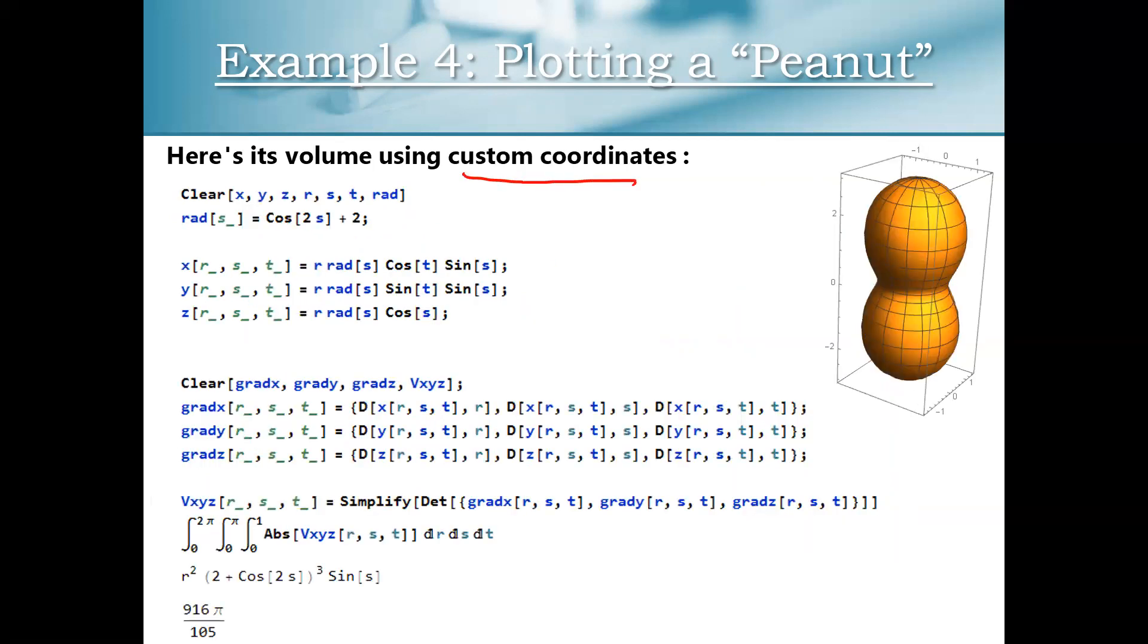And here it is using custom coordinates. Guys, it looks very similar, but right here I have modified my X of RST, Y of RST, Z of RST, so that instead of just having R, I have R rad of S. Again, R rad of S, R rad of S. And now what R is going to represent is a parameter that's going to go from zero to one. And I've instead made my volume conversion factor a more complicated quantity. You could see that I didn't put a semicolon on the end of this line of code right here for computing the volume conversion factor, so we could see the output. The volume conversion factor is this expression, which is totally fine. I know it looks a little bit crazy. No big deal with that.